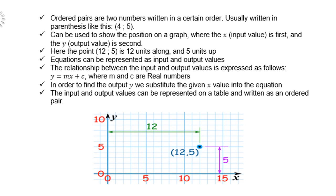Ordered pairs are two numbers written in a certain order, usually in parentheses like round brackets. They can be used to show position on a graph, where x, the input value, is first, and y, the output value, is second. Here is the point 12 and 5: 12 units along and 5 units up. Look at the sketch and you will see. The relationship between input and output values is expressed as y equals mx plus c, where m and c are real numbers. To find the output y, we substitute the given x value into the equation. The input and output values can be represented in a table and written as ordered pairs.